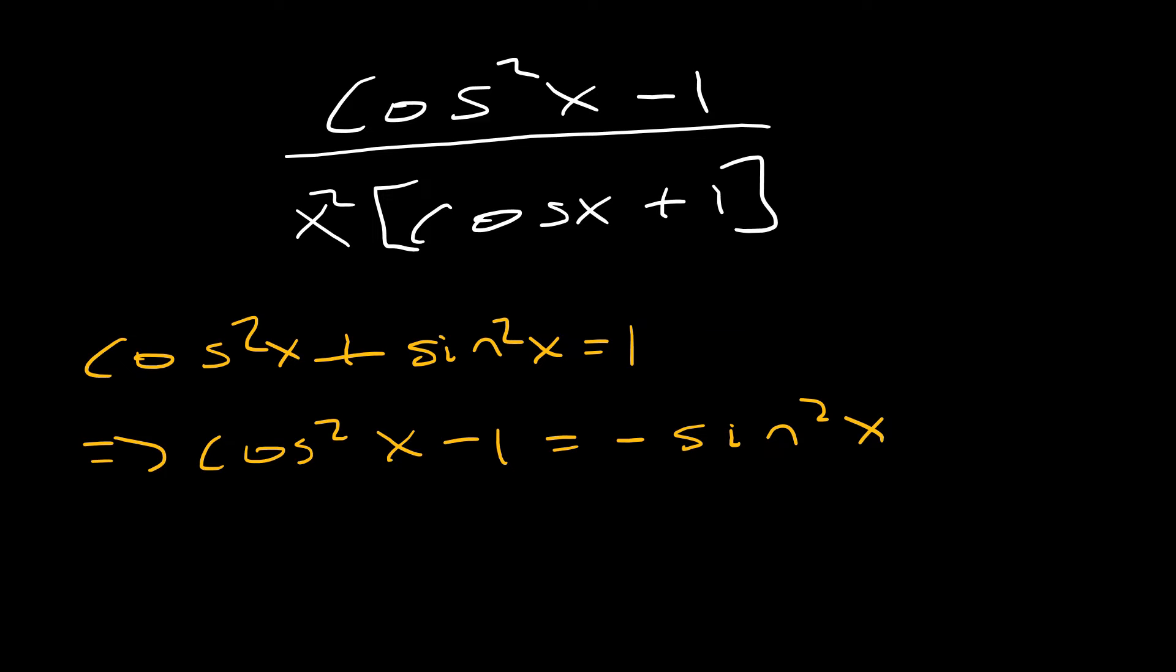In other words, cosine squared x minus 1 is negative sine squared x. So that's going to give us the negative sine squared x in the numerator now. And in the bottom, we still have x squared cosine x plus 1.